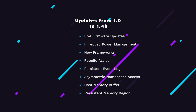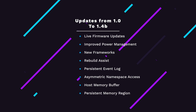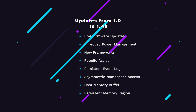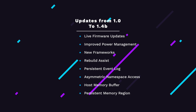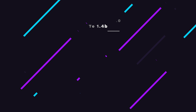Over the years between 2014 and 2019, many incremental updates to the 1.0 standard were introduced. This included things like live firmware updates, improved power management, new frameworks, a rebuild assistant, persistent event log, asymmetric namespace access, host memory buffer, and persistent memory region. The last update to 1.0 was version 1.4B.